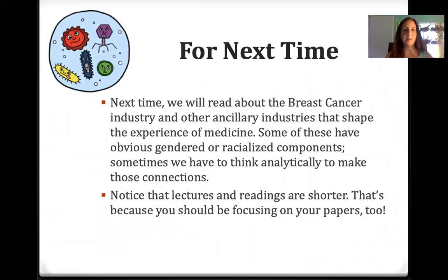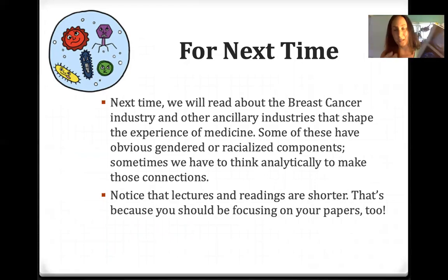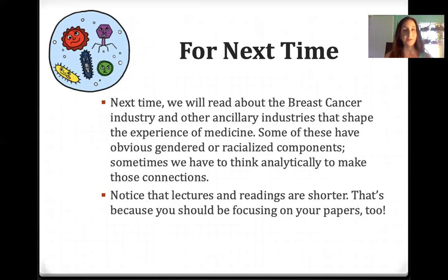For next time, we'll be reading about the breast cancer industry and other ancillary industries that shape the experience of medicine. Some of these have obvious gendered and racialized components; sometimes we have to think analytically to make those connections. Our reading from Kelly Joyce, Magnetic Appeal — another really good book — isn't obviously about race or gender, but you could still think about those things as you're reading. Notice that our lectures and readings are getting shorter. That's because I know you're focusing on your papers now, so I'm trying to back up a little bit to give you time to do your own work. I look forward to seeing what you write, and I hope that you enjoy this lecture.